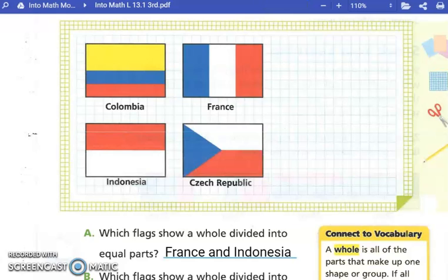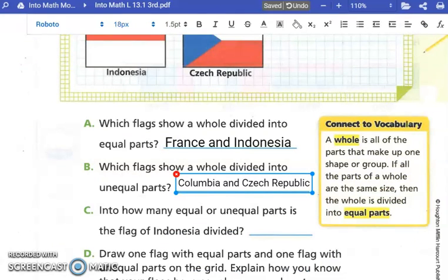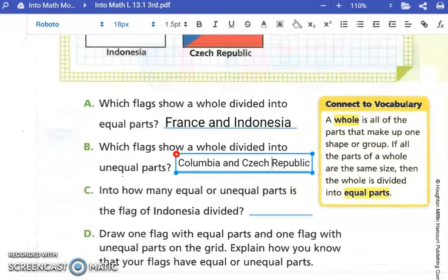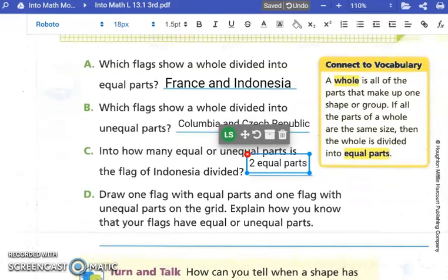I need you to go ahead and write those two countries in there. France and Indonesia. Those are countries. So what do we do with the first letter of a country? We capitalize it. The second question says, which flags show a whole divided into unequal parts? Colombia and the Czech Republic. Into how many equal or unequal parts is the flag of Indonesia divided? Two equal parts.